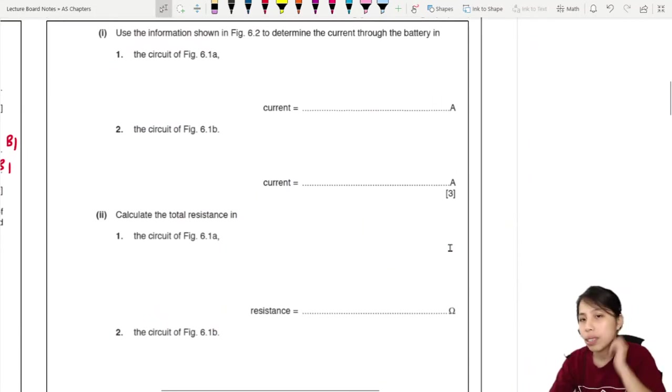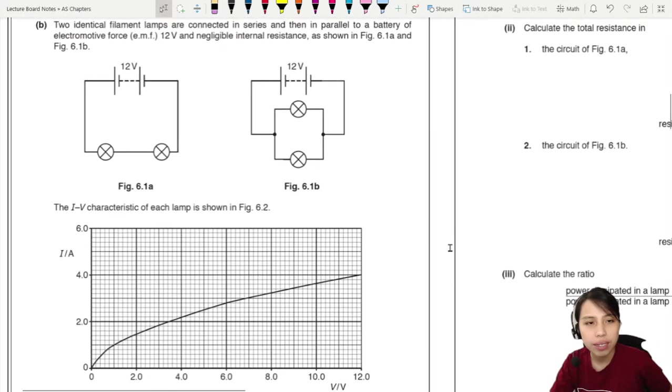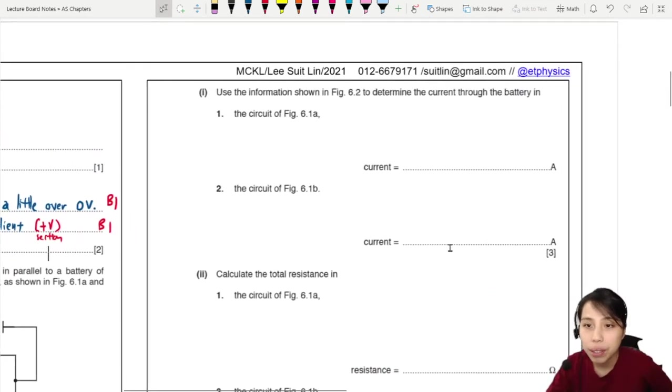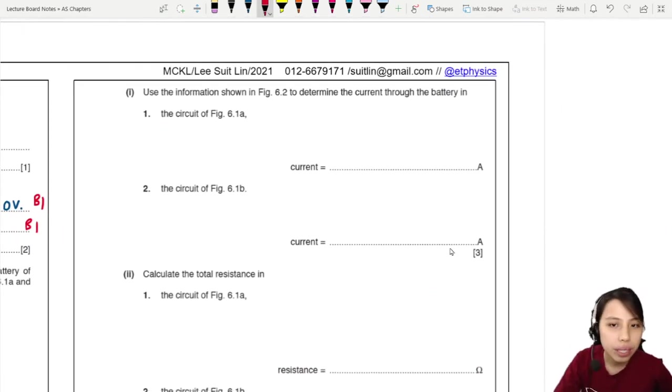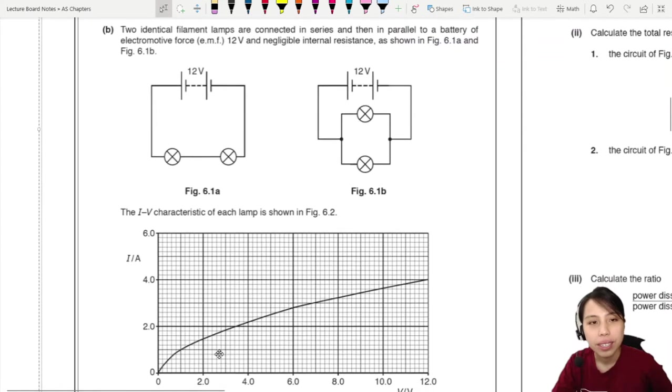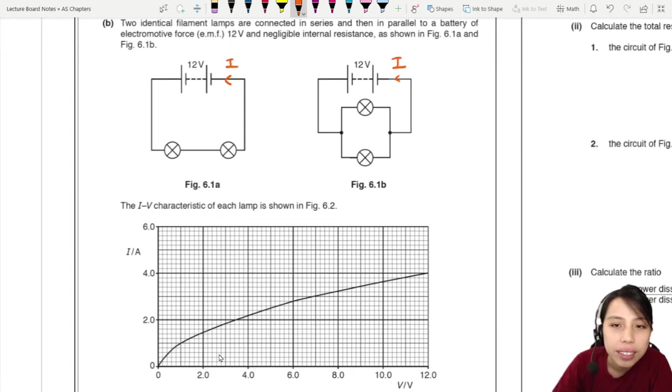Use the information shown to determine the current through the battery in 6.1a and 6.1b. So we need to find current. Current where? Very important. Current through the battery. In other words, if we go back to this circuit, they're asking us for current here and current here.